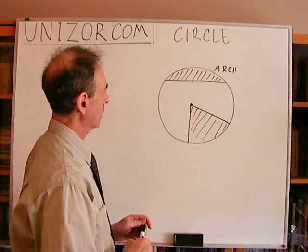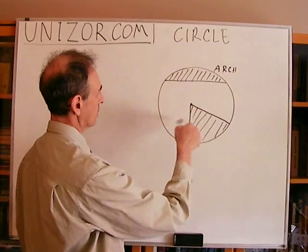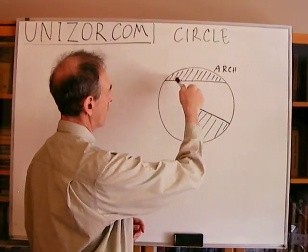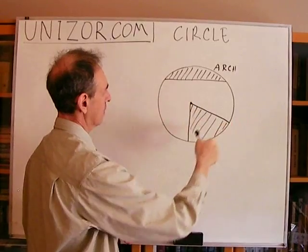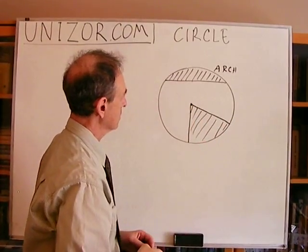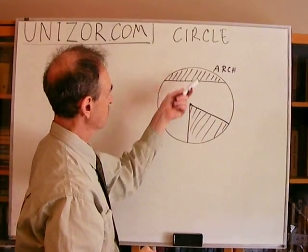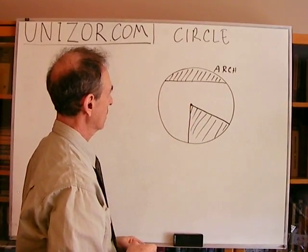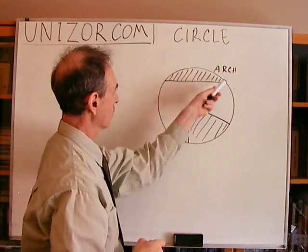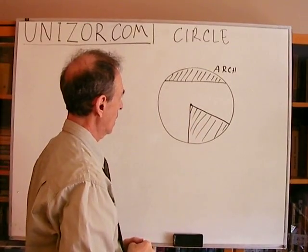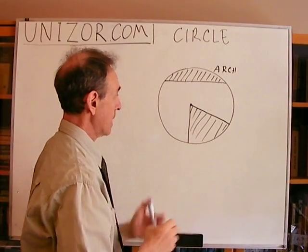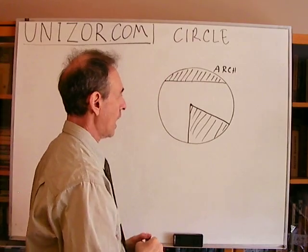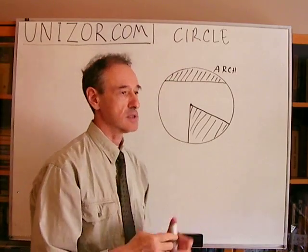Let me just summarize what we know: circle, center, radius, chord, arc, diameter, and the area within the circle, which might be bounded by either a chord or two radii. That's basically it — just a terminological introduction into the concept of a circle.